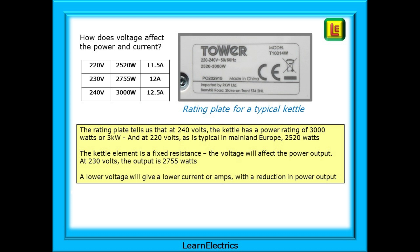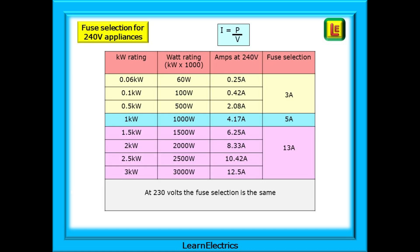For a given appliance, if the voltage increases the current will increase; reduce the voltage and the current and watts will decrease — we as users have no control over this. Take a 3 kilowatt kettle as an example: it is only 3 kilowatts at 240 volts and uses 12.5 amps. The rating plate tells us it will also function at 220 volts in mainland Europe, but will only consume 11.5 amps and the wattage will only be 2520 watts — it will take a little longer to boil the water. The table also shows the data for 230 volts. This is because the kettle element is a fixed resistance and we are changing the voltage: change the voltage, change the amps and change the watts. This table shows the fuse selections for different power or kilowatt ratings and the current flowing. The current at 230 volts will be fractionally smaller but the fuse selection will be the same.